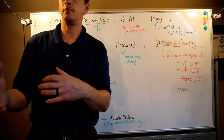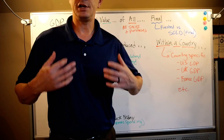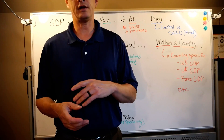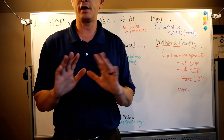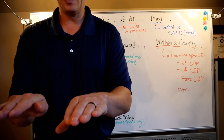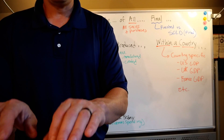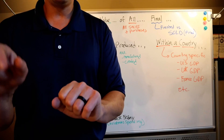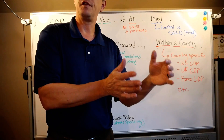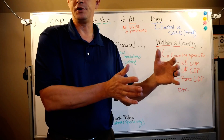Imagine yourself at a department store — Belk's or whatever — and you're going to buy a shirt. You find a shirt you like: the price, the appearance, everything about it, so you're going to buy it. You go up to the counter, put the shirt on the counter, and in exchange for the shirt you pay the clerk. On one side of the counter you have a customer who is spending money — that's an expenditure.